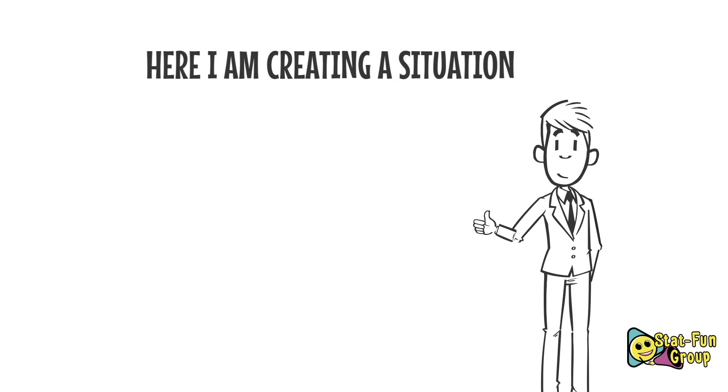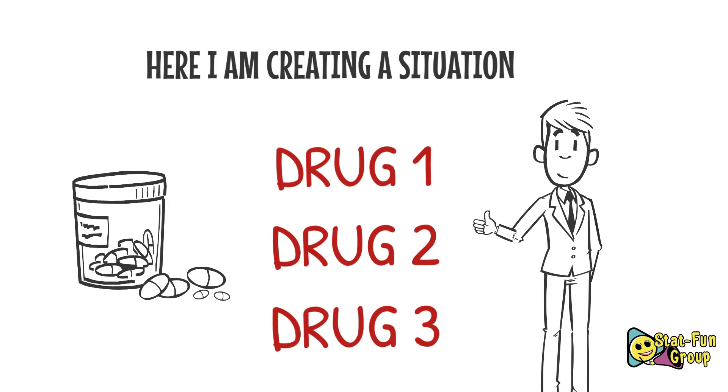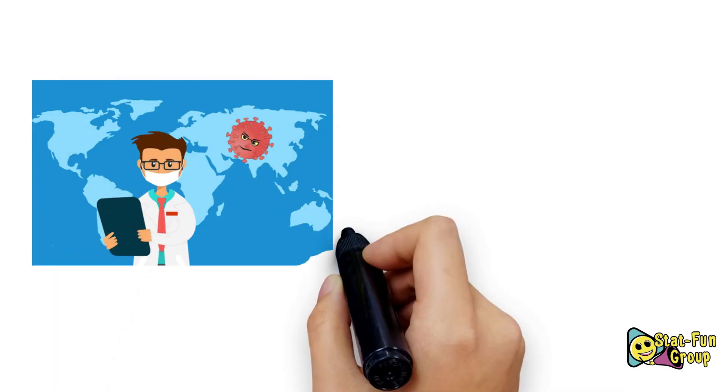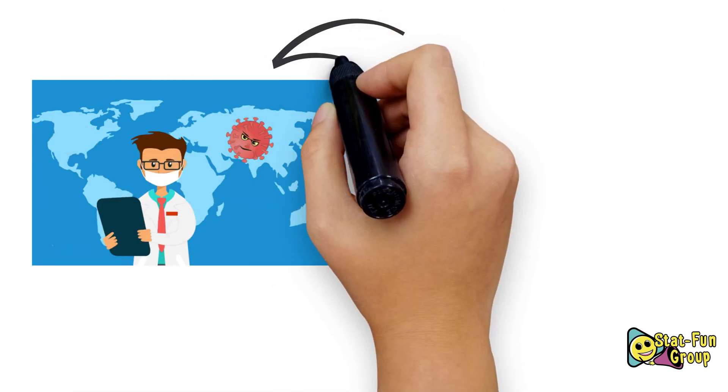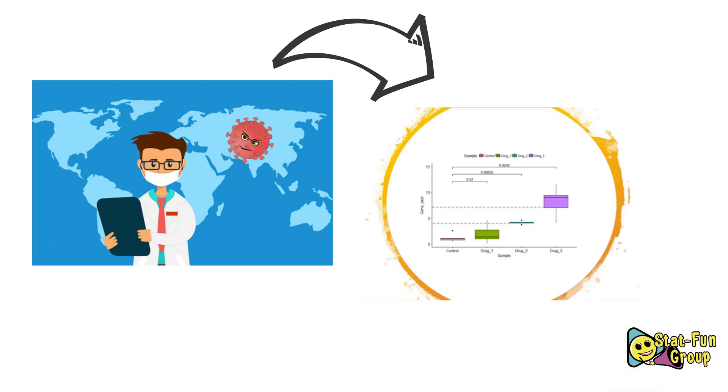There are three drugs - one, two, and three - available in the market to control corona. A medical practitioner distributed these three drugs uniformly to all his corona patients such that only one drug per patient. After some days he checked all of his patients for coronavirus and the test results collected were plotted in a boxplot.